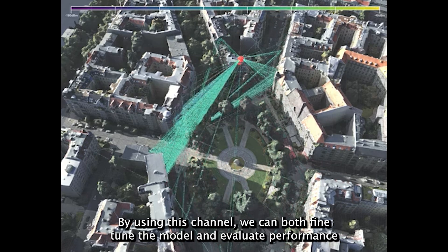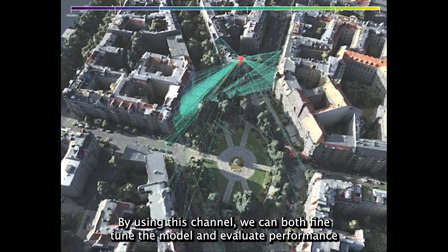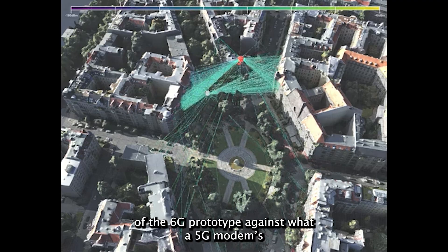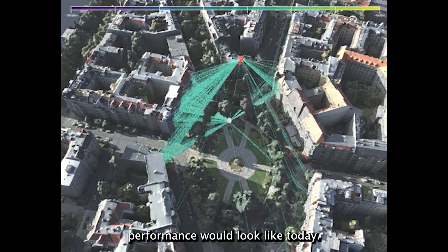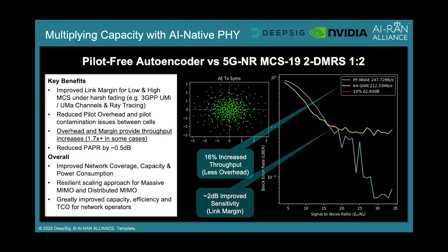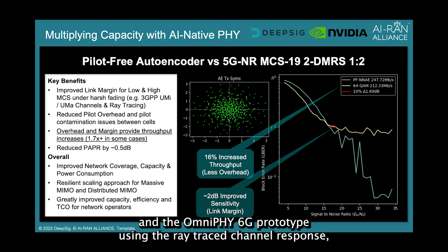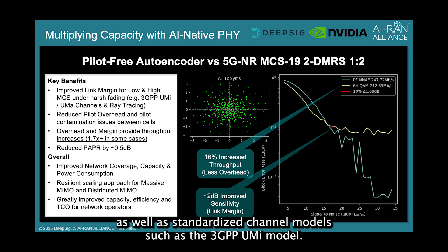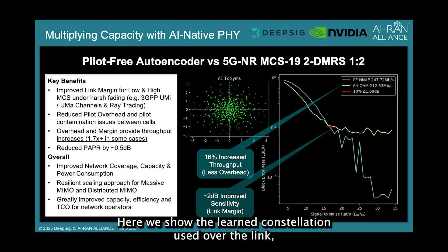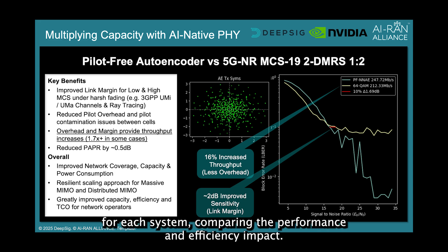By using this channel, we can both fine-tune the model and evaluate performance of the 6G prototype against what a 5G modem's performance would look like today. We evaluate the performance of both methods in terms of block error rate versus signal-to-noise ratio for both 5G and the OmniFi 6G prototype, using the ray-traced channel response as well as standardized channel models such as the 3GPP UMI model. Here we show the learned constellation used over the link, alongside a performance curve for each system, comparing the performance and efficiency impact.